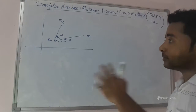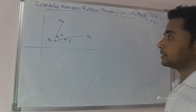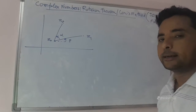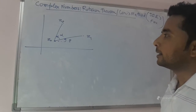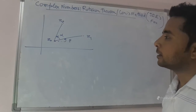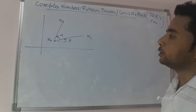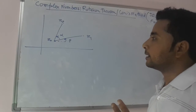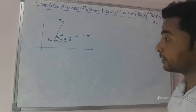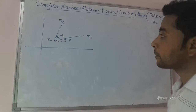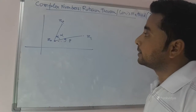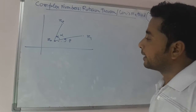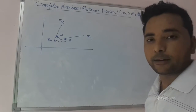Let me re-explain the picture. The picture has three points represented by Z0, Z1, and Z2. There is a line joining Z0 and Z1 which makes an angle theta with the positive direction of the x-axis, and there is a line joining Z2 and Z0, and the angle between these two lines is alpha.